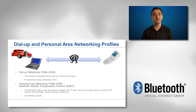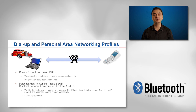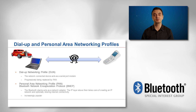On the other hand, Personal Area Networking Profile, known as PAN, is a more recent profile and enables the Bluetooth stack to act as a network adapter, typically enabling the transport of Internet Protocol, known as IP traffic.